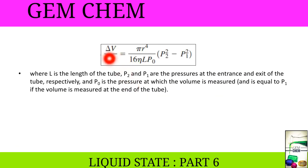Whereas the flow of an ideal gas through a tube is given by delta V by delta T equals pi r to the power 4 by 16 eta L P0 multiplied by P2 square minus P1 square, where L is the length of the tube, P2 and P1 are the pressures at the entrance and exits of the tube respectively, and P0 is the pressure at which the volume is measured and is equal to P1 if the volume is measured at the end of the tube.